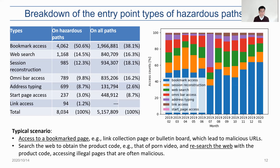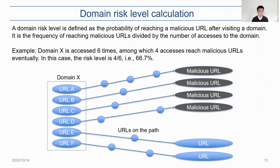Before that, we would like to define a parameter called domain risk level. A domain risk level is defined as the probability of reaching malicious URLs after visiting a domain — it is the frequency of reaching malicious URLs divided by the number of accesses to the domain. For example, if domain X is accessed six times and four of those accesses eventually reach malicious URLs, the risk level is 4 out of 6, that is 66.7%.